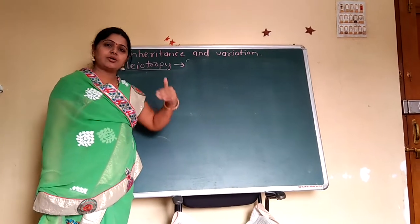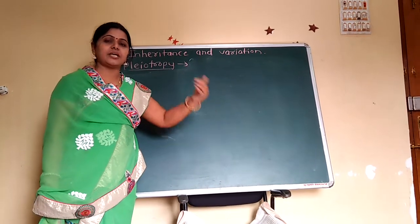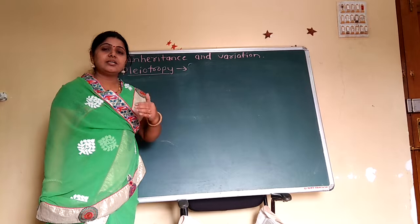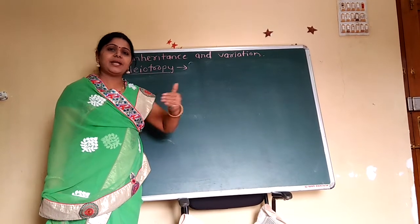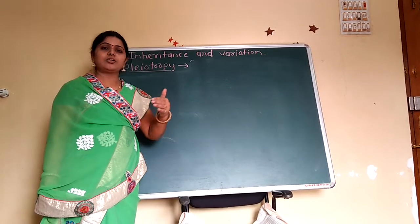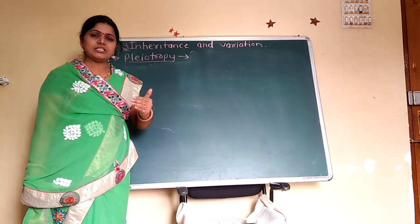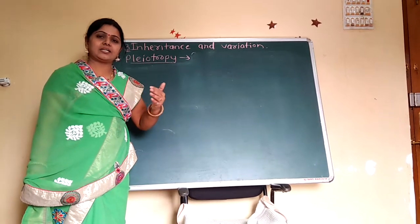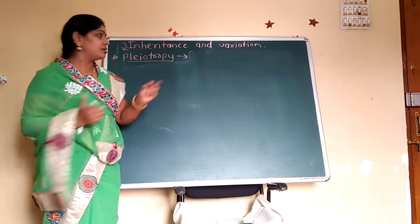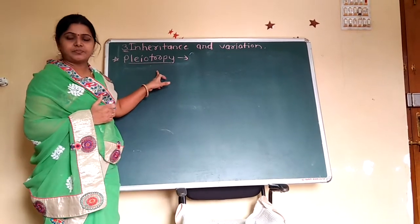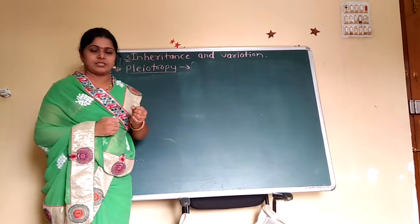For example, one gene controls the height of a plant, the seed shape, or the round ring color. But in some cases, there is one gene controlling many characters, or many traits, or many phenotypes. That gene is called a pleiotropic gene, and the phenomenon is called pleiotropy, which is also called pleiotropism.